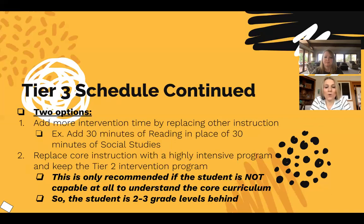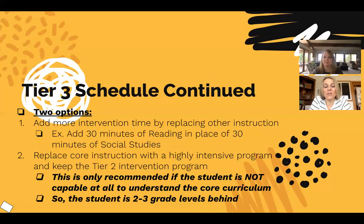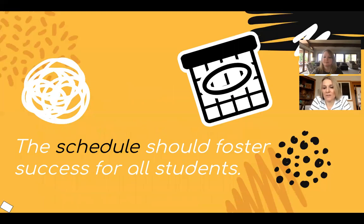The second option is to replace core instruction with a highly intensive program while keeping the Tier 2 intervention. This is only recommended if the student is not capable at all of understanding the core curriculum — this student would maybe be two to three grade levels behind, likely in a SAT process or may have an IEP. This needs to be a team decision. We recommend that all students receive their core reading or math program and have instruction at grade level, but there are some cases that have to go this route.